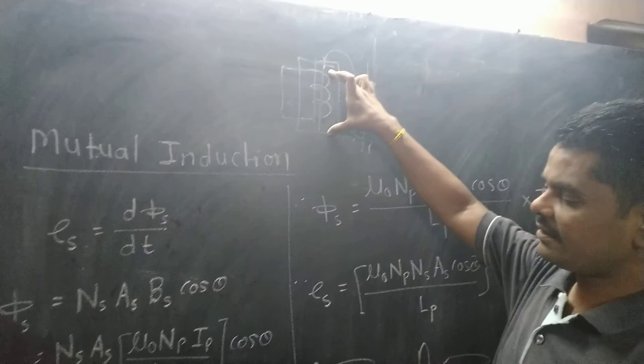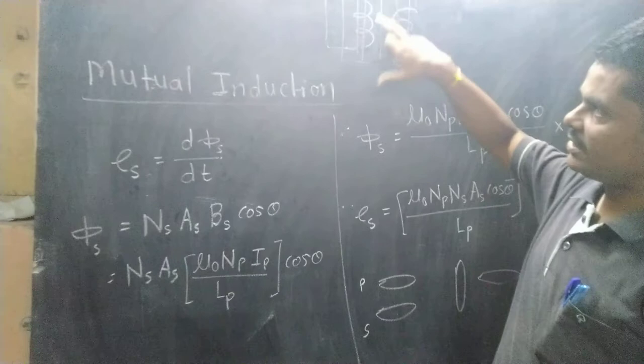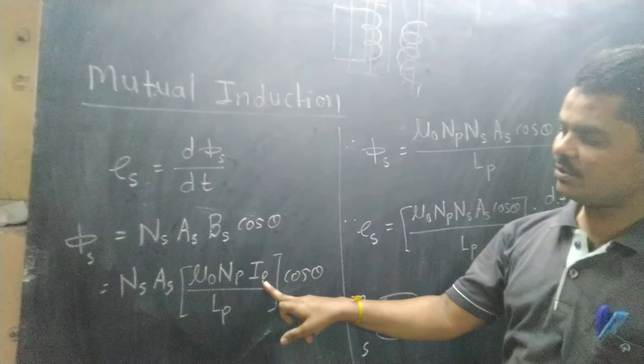The magnetic field will be linked to the secondary coil. The formula is mu0 times n, where n means number of turns per unit length. The number of turns means current flow in the primary, divided by the length of the primary, into the current flow in the primary. This gives the magnetic field.